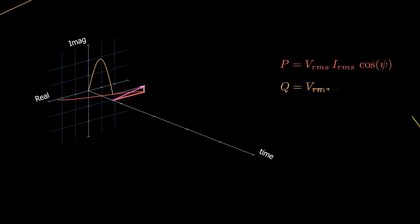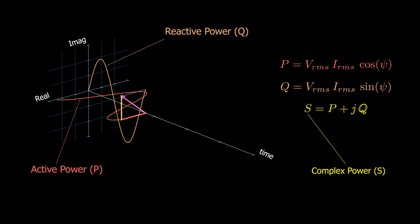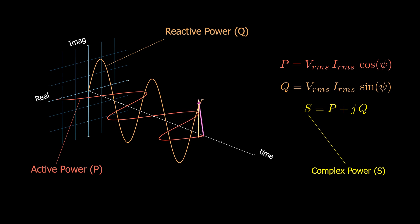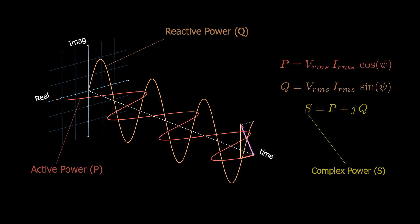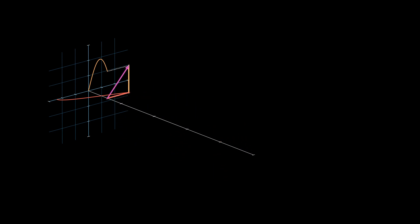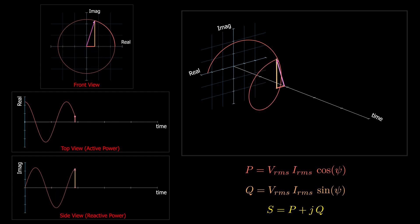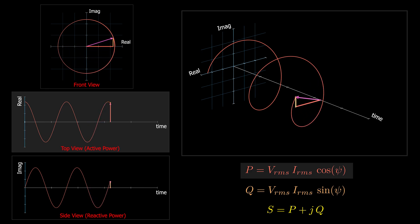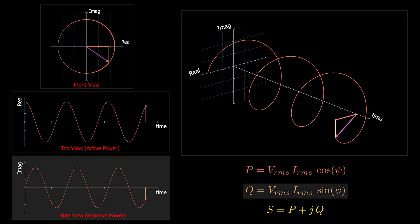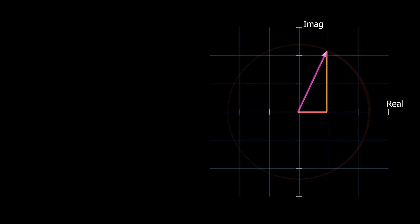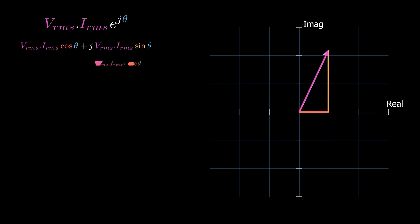If we trace the variation of active and reactive power as we sweep the phase angle, we find that the active power forms a cosine function with respect to the phase angle, with magnitude equal to the apparent power — the real part is a cosine function of the phase. The imaginary part, or reactive power, is a sine function of the phase. The real part of a complex number equals the magnitude times cosine of the angle, and the imaginary part equals the magnitude times sine.